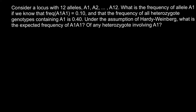Hi, today's problem is going to be about population genetics. Consider a locus with 12 alleles A1, A2, and so on including A12. What is the frequency of allele A1 if we know that the frequency of the homozygous state for this allele is 0.10 and the frequency of all heterozygote genotypes containing A1 is 0.4? Under the assumption of Hardy-Weinberg, what is the expected frequency of the homozygous state and of any heterozygote involving A1?